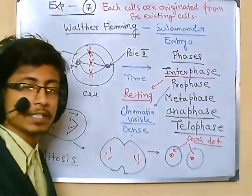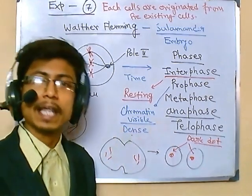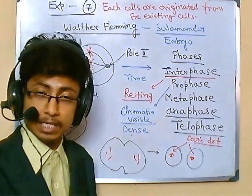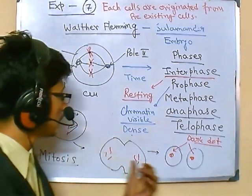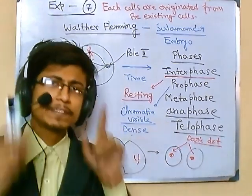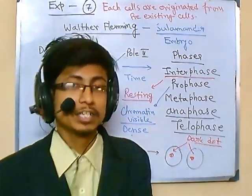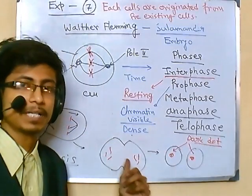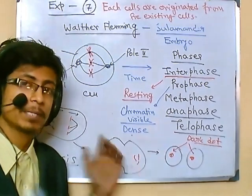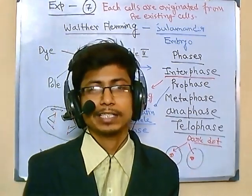That is concept number seven — each cell originates from a pre-existing cell. This is a very important concept, because the cells are capable of dividing and transferring the material — this chromatin thread, later known as the chromosome. If the factor provided by Mendel is something which is transferred from one generation to another, then the chromosome can be something which is holding those factors. We never know that for sure yet, but let's see in the next part.